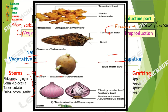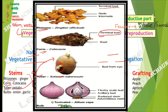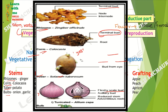Natural vegetative propagation occurs via stems, roots, or leaves. Stems can be categorized by shape: the first is rhizomes — these look like roots underground, and the best example is ginger. Terminal buds on rhizomes give rise to new plants. The second is corms, like arabi (taro). Terminal buds on corms give rise to new plants. The third is tubers — swollen underground stems that store food and have many buds called 'eyes'. The fourth is bulbs — disc-shaped swollen stem parts with fleshy scales that also store food.